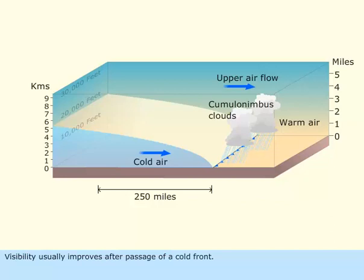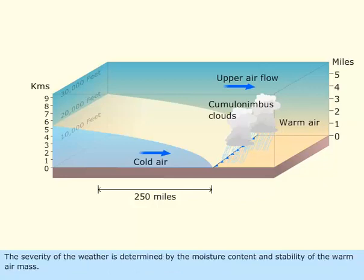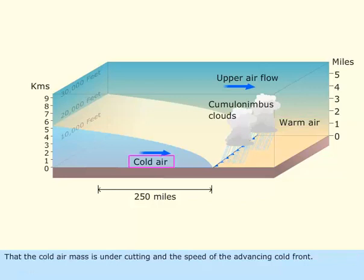Visibility usually improves after passage of a cold front. Cold fronts are not all the same. The weather associated with a cold front may vary from a minor wind shift to severe thunderstorms, restricted visibility, and violent gusty winds. The severity of the weather is determined by the moisture content and stability of the warm air mass that the cold air mass is undercutting, and the speed of the advancing cold front.